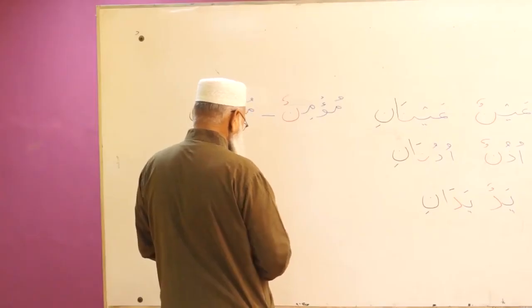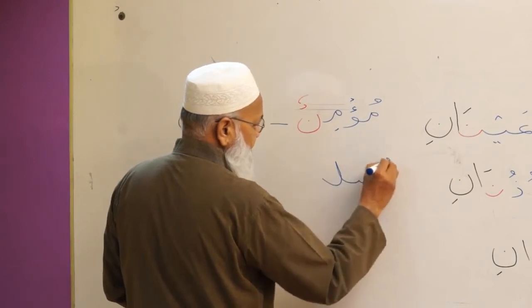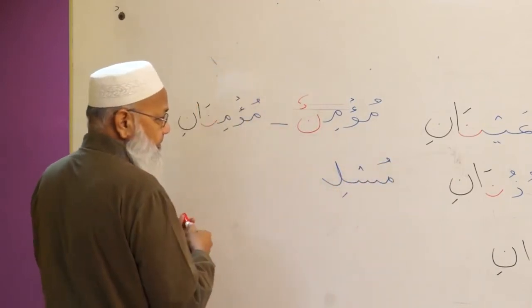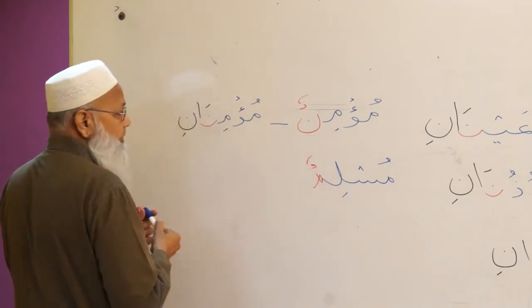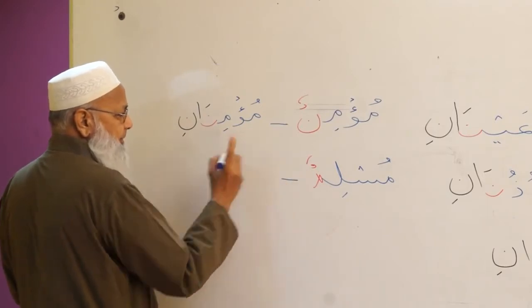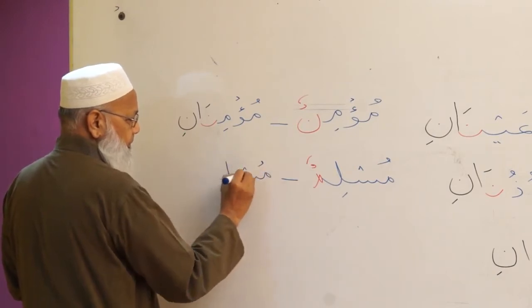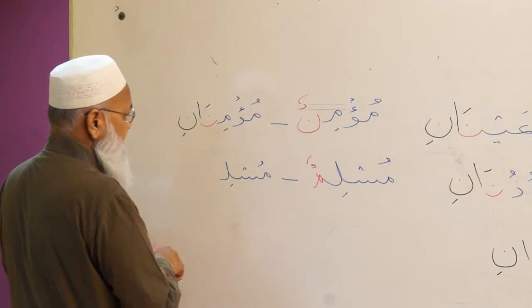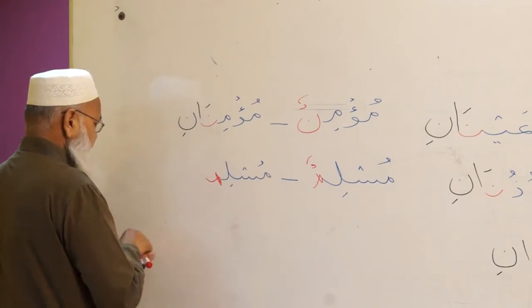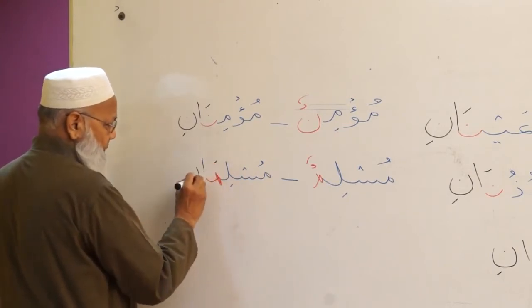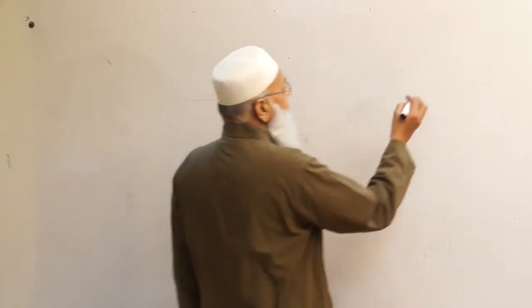Then muslimun — a Muslim man. Its musanna in the rafa form would be muslimani — two Muslim men.